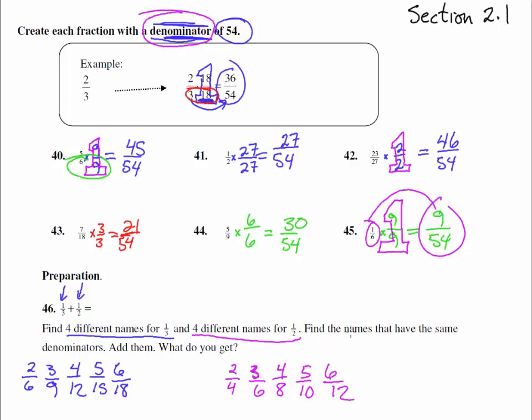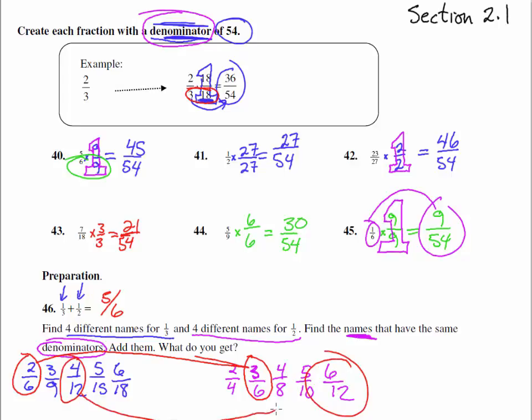So now we have these. Now it says find the names that have the same denominators. So you'll notice here we have two-sixths is another name for one-third, and three-sixths is another name for one-half. So these two could actually add together, 2 sixths and 3 sixths give you 5 sixths. Look at that. One-third and one-half don't add together until you use denominators that are exactly alike. Notice we could have also done four-twelfths and six-twelfths, those guys add together and give us ten-twelfths.